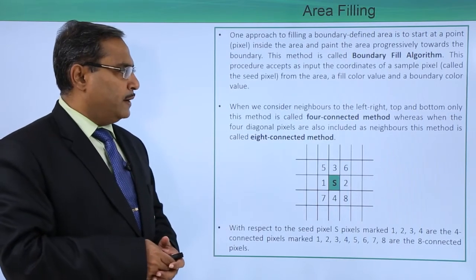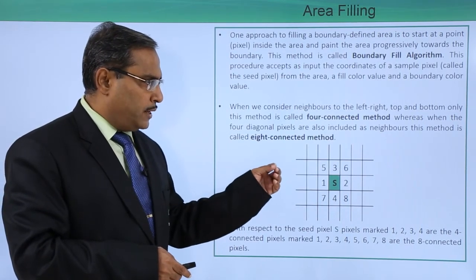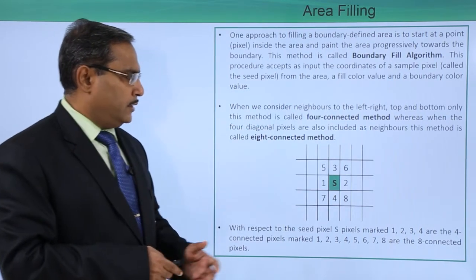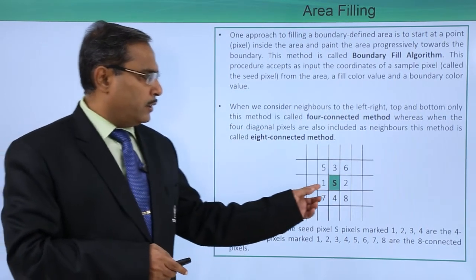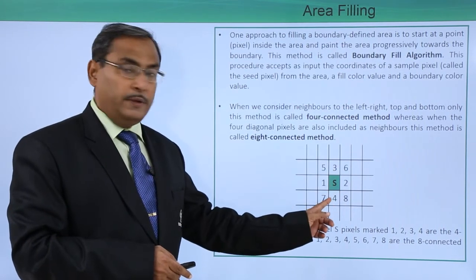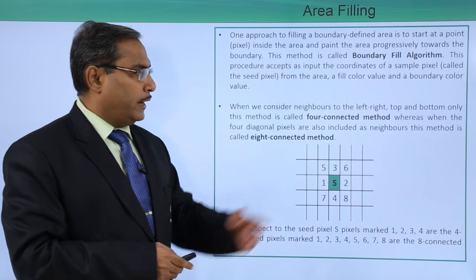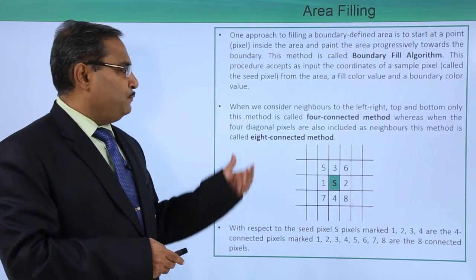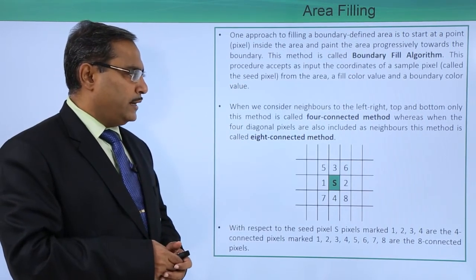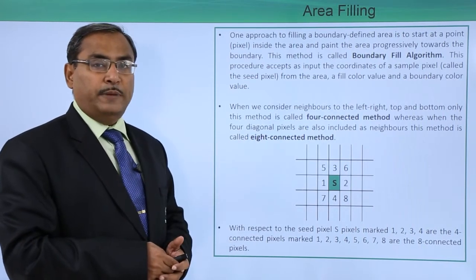When we consider neighbors to the left, right, top, and bottom only, this method is called 4-connected. We are considering it as the 4-connected method. Whereas when the 4 diagonal pixels are also included as neighbors, this method is called the 8-connected method.